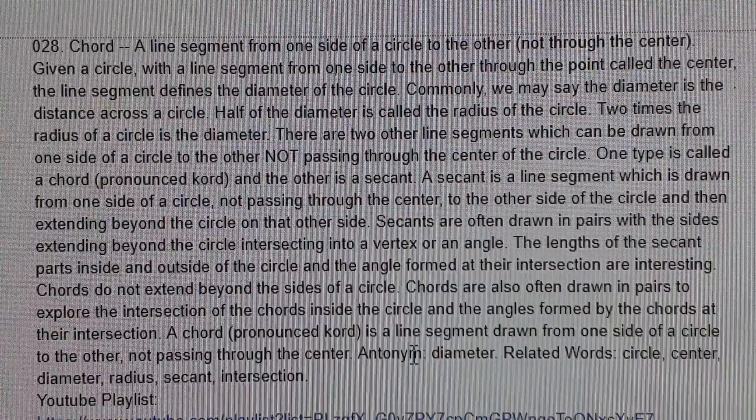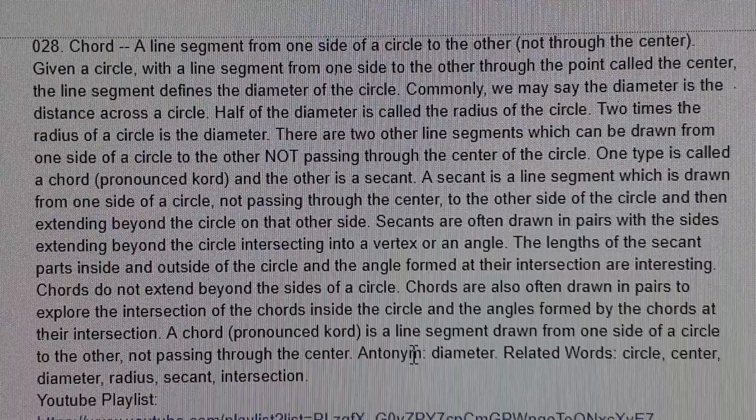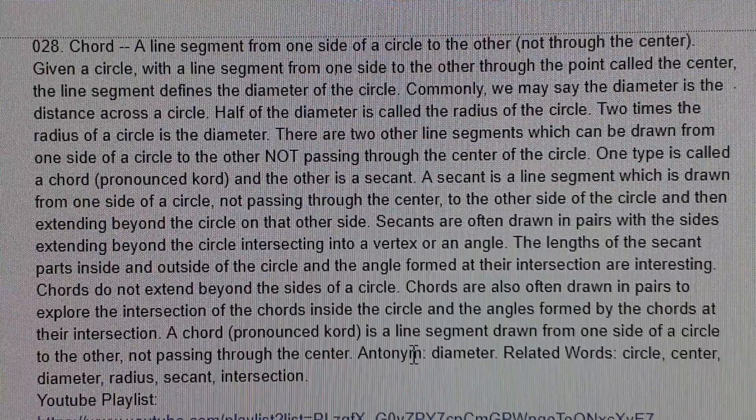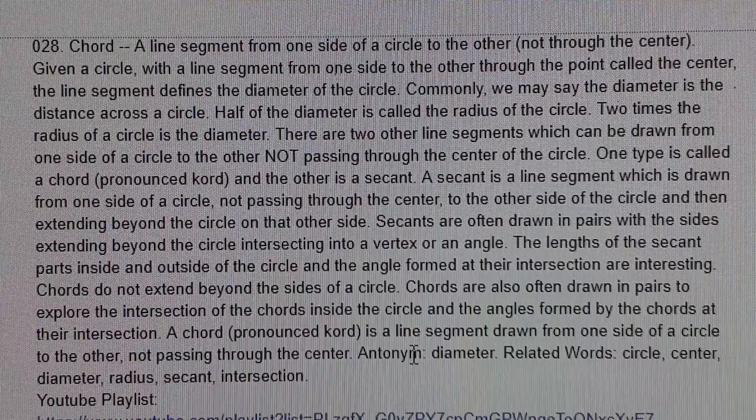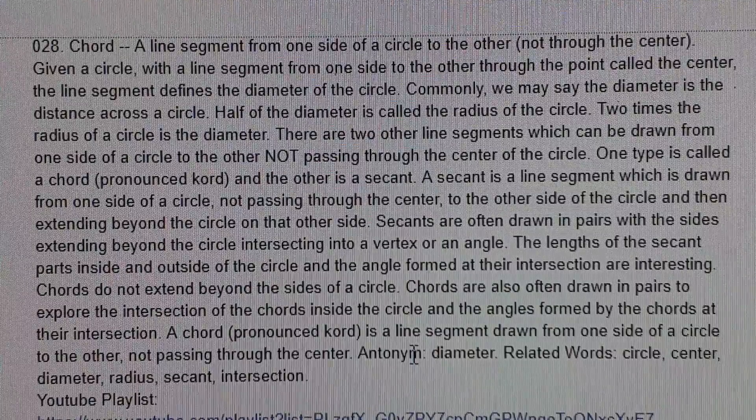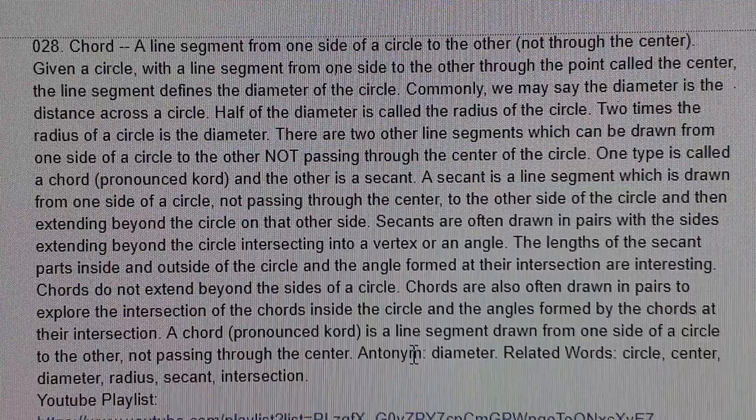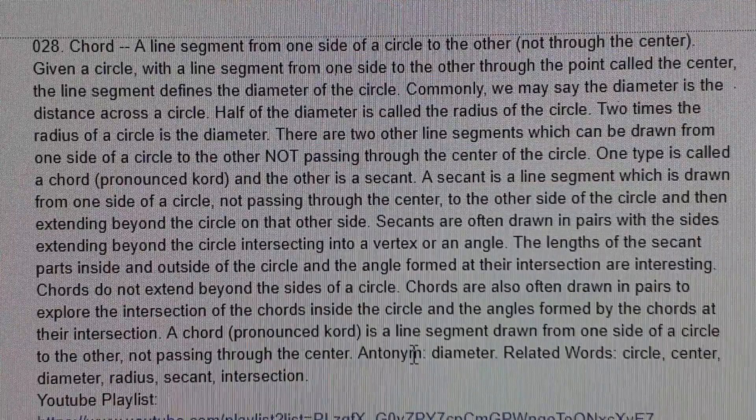Chord: A line segment from one side of a circle to the other (not through the center). Given a circle with a line segment from one side to the other through the point called the center, the line segment defines the diameter of the circle.